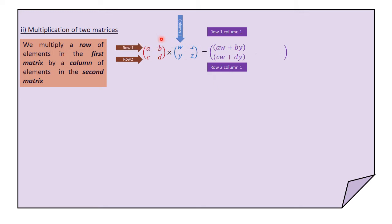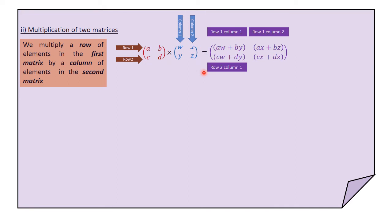We then move to the first row of the first matrix with the second column of the second matrix, which gives us the element AX plus BZ: A times X plus B times Z — the element in the first row, second column of the resulting matrix. Lastly, we multiply the second row of the first matrix with the second column of the second matrix, giving CX plus DZ — the element in the second row, second column. That is essentially what multiplication of matrices is.